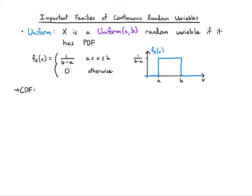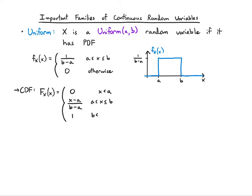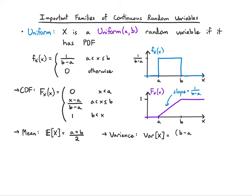The CDF will be zero for a while and then have an offset and a slope. The slope is one over b minus a, which makes sense since the PDF has that value. It starts going up at a, continues until it hits b, then flattens back out and stays at one. The mean is a plus b over two, right in the center, and the variance is b minus a squared over 12 — that factor of 12 we remember from the discrete uniform case.